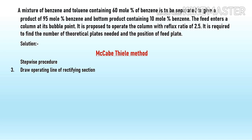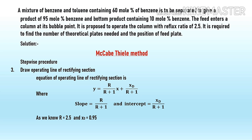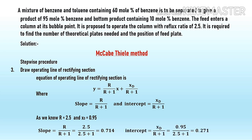The next step is to draw the operating line of the rectifying section. The equation is: Y = (R / (R+1)) * X + XT / (R+1), where the slope = R / (R+1) and the intercept = XT / (R+1). In this example, the reflux ratio R = 2.5 and XT = 0.95, so slope = 2.5 / (2.5+1) = 0.714, and intercept = 0.95 / (2.5+1) = 0.271.